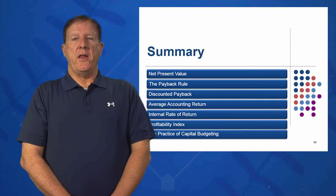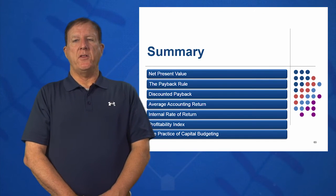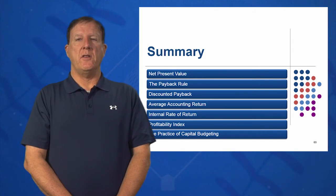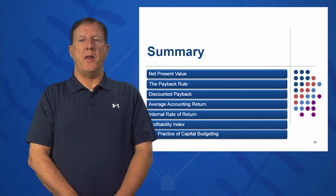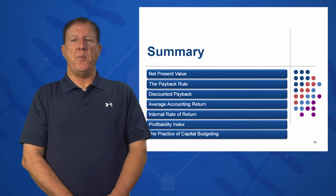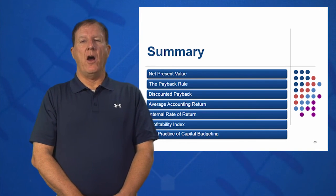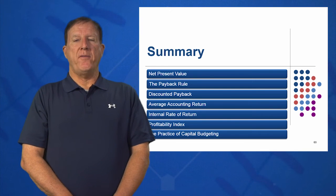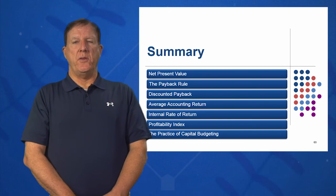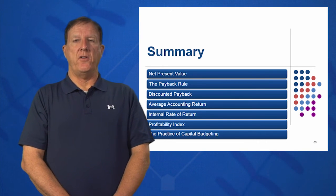In summary, we've gone over six methods of assessing large capital investment projects that are common in industry: net present value, payback, discounted payback, AAR, IRR, and profitability index. At this point, you should be able to calculate all six of those methods.